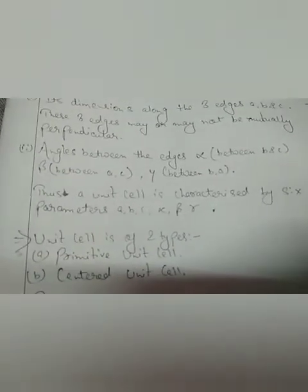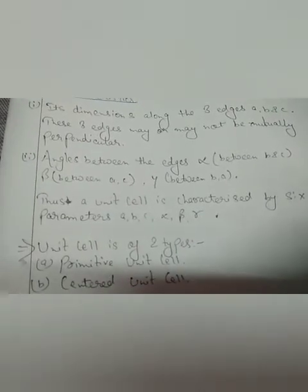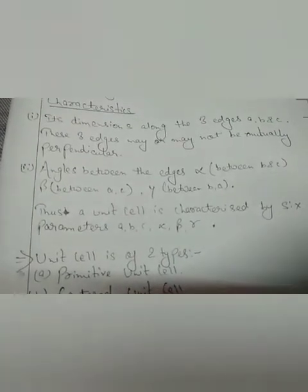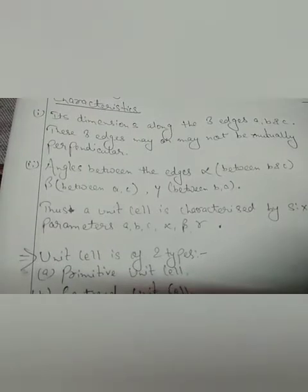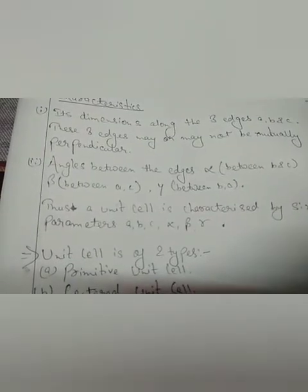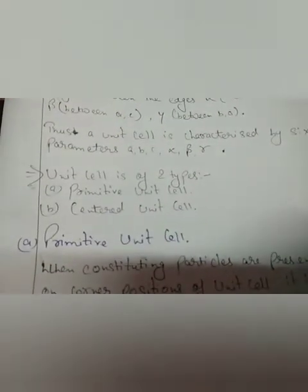Thus, the unit cell is characterized by 6 parameters: the three edges A, B, and C, and the three angles alpha, beta, and gamma, which are the angles between the edges. Unit cell is of two types: primitive unit cell and centered unit cell.